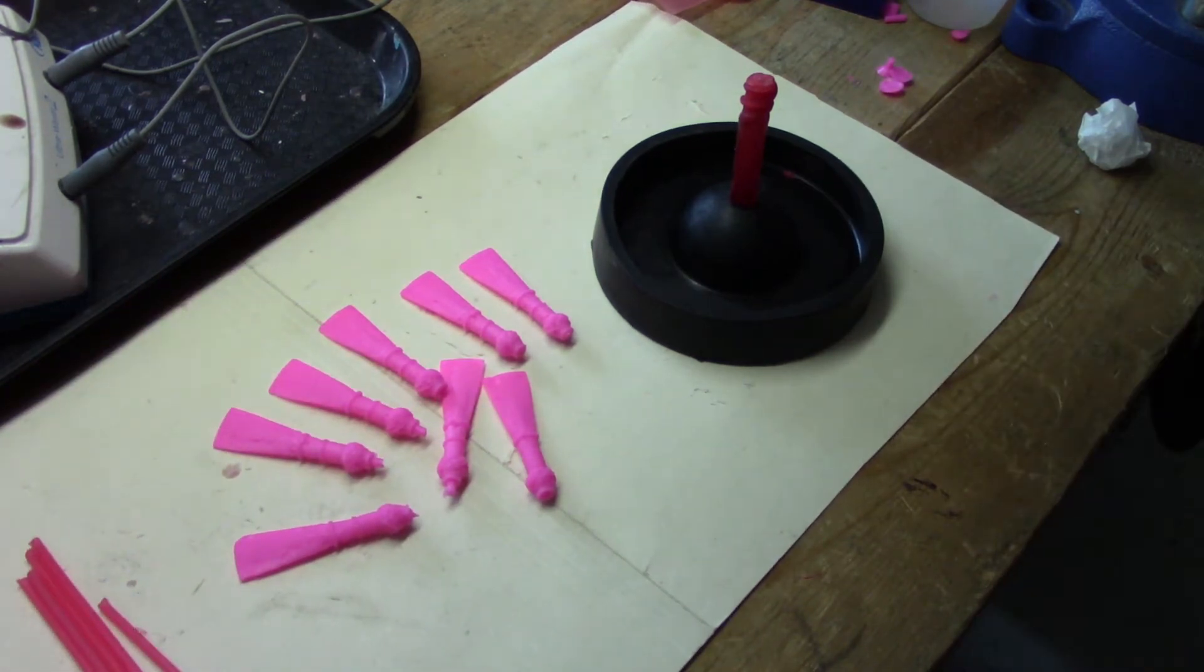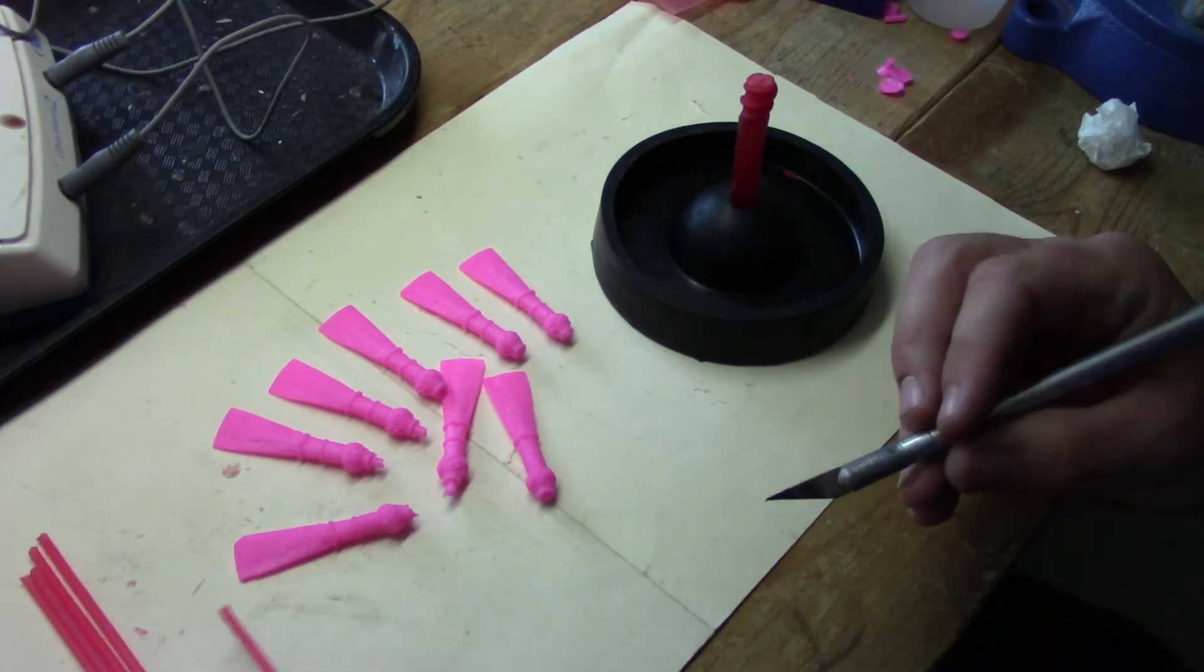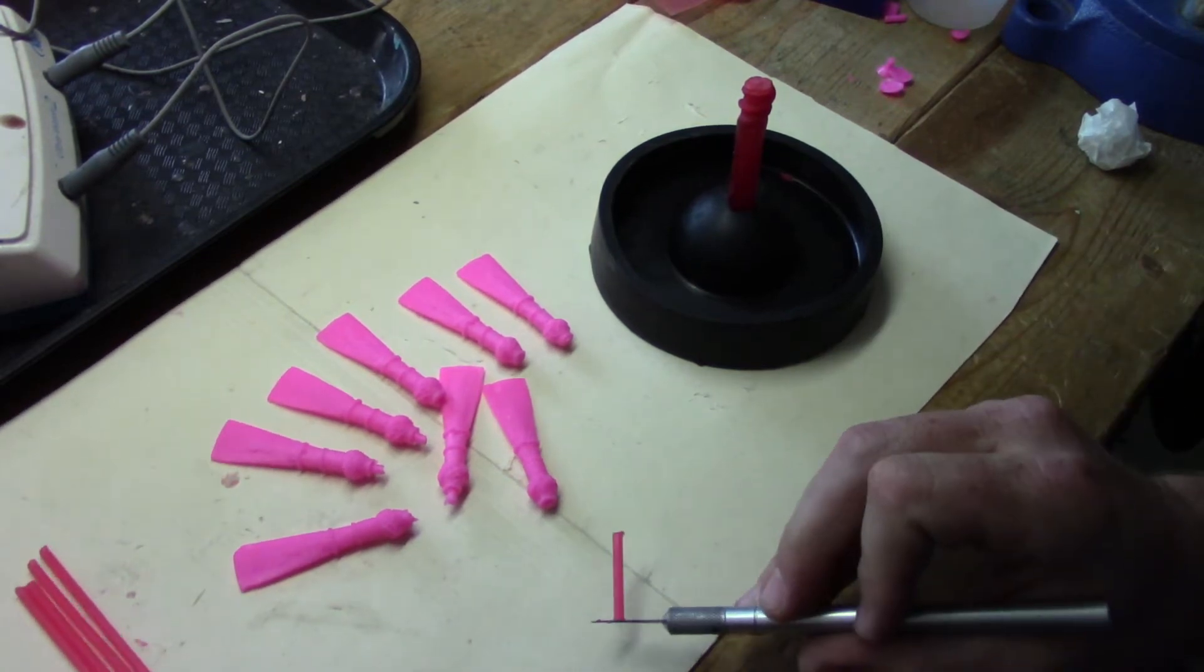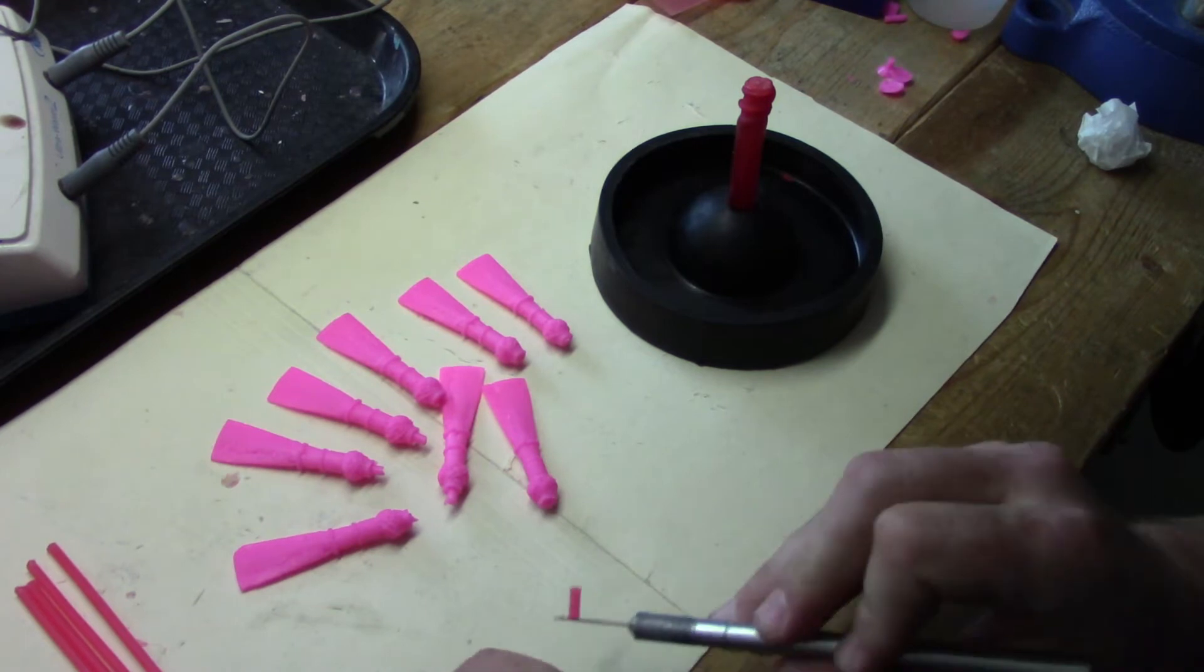I usually like to use an X-acto knife to cut these to length prior to starting to wax weld them on. I'm going to go about that long there, maybe half to three-quarter of an inch.